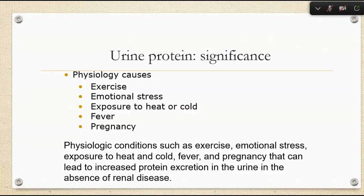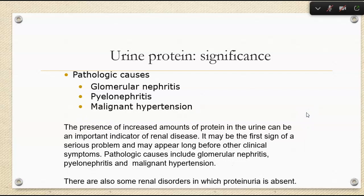What's the significance of protein in urine? Exercise, stress, exposure to extreme heat or cold, fever, and pregnancy can all cause increased protein in the urine without necessarily indicating renal disorder. Pathologic causes would be glomerulonephritis, pyelonephritis, and malignant hypertension. These can be the first sign of a serious problem and can come far earlier than any other signs and symptoms — the urinalysis result is really useful as an early warning to a doctor.